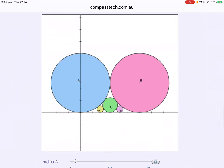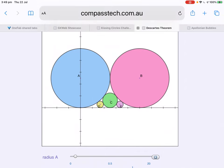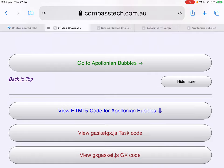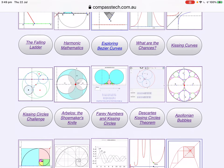Now there's lots of applications and interesting and useful mathematics related to kissing circles. One that interests me in particular involves what are called Fari numbers and Ford circles. We have a whole worksheet on that. The link to the GX Web Showcase is available below this video on YouTube. And you'll see, across the middle of the screen here, five activities which I've called the kissing circles collection. A kissing circles challenge. One on the arbelos, which is the old Greek term for the shoemaker's knife. Fari numbers and kissing circles. Descartes' kissing circle theorems. And the Apollonian bubbles.